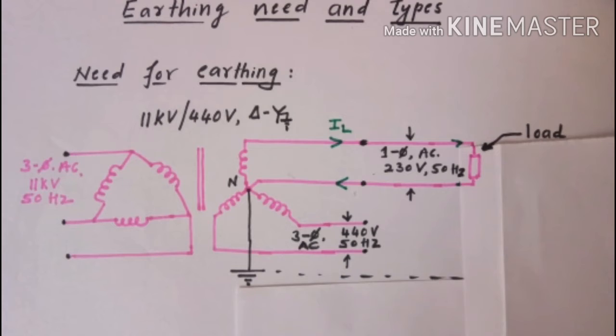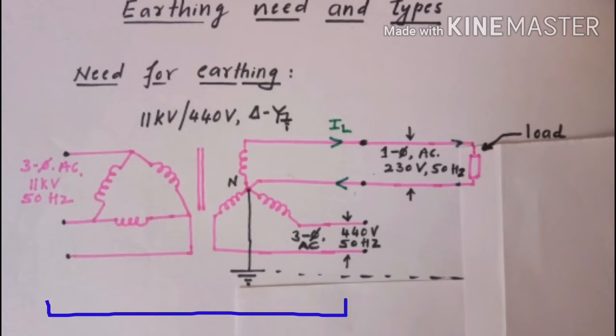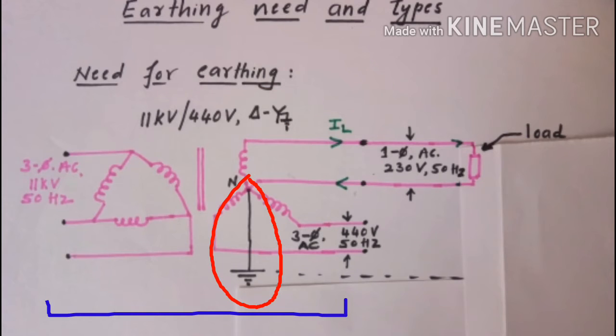In this video lecture, I am going to discuss the need for earthing and the types of earthing. To explain the need for earthing, I have considered a supply system in which delta star transformer rated for 11 kV by 440 volt with neutral of star grounded.